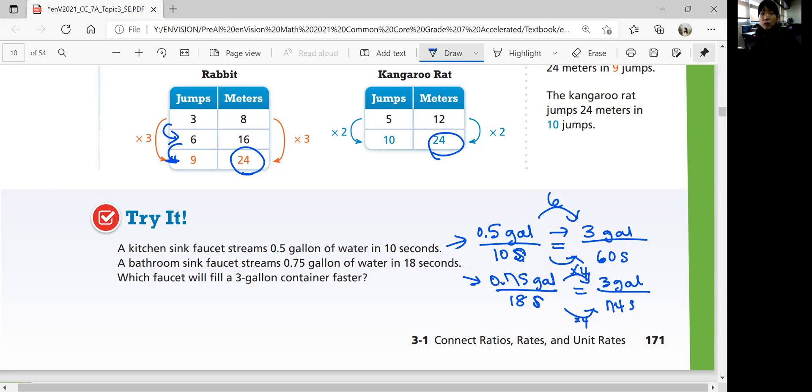What about 0.75 to 3? 0.75 times two is 1.5, so if you have four 0.75s, you have three gallons. Then you're multiplying it by 4. 18 times 4 would be 72 seconds. The kitchen sink faucet will take 60 seconds. Bathroom sink faucet will take 72 seconds. Which is faster? The less seconds you have would be faster. It fills up faster. 60 seconds is smaller than 72.